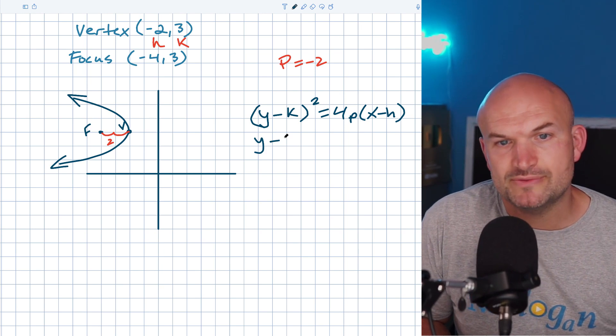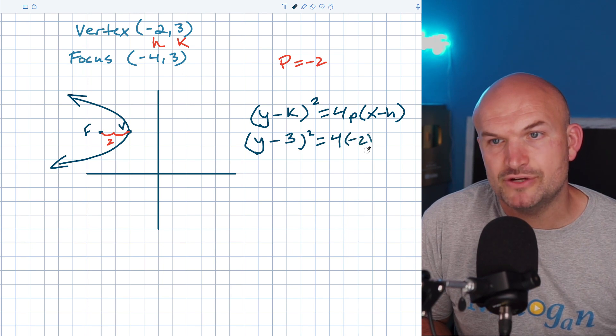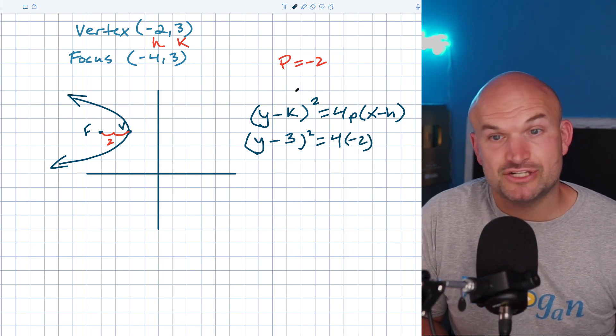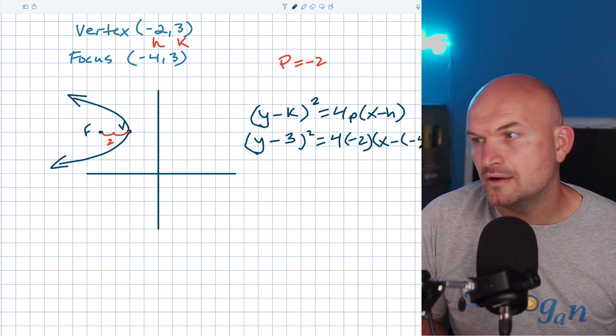So we have (y - k), which is going to be three, squared equals four times P, which is now negative two, and then (x - h). So be careful here, make sure you're using your parentheses. So x minus a negative four.